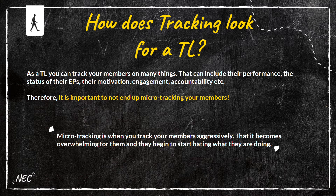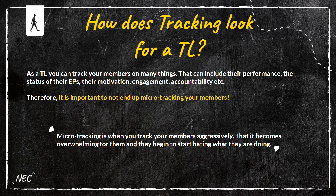Therefore it is important to not end up micro tracking your members. Micro tracking is when you track your members so aggressively that it becomes overwhelming for them and they start hiding what they're doing. You're tracking every single little thing they're doing — every text, call, everything — and it becomes very overwhelming and could really demotivate them. You have to be smart with tracking, you can't over-track, and you have to give them the freedom to do what they need to do. So don't micro track.